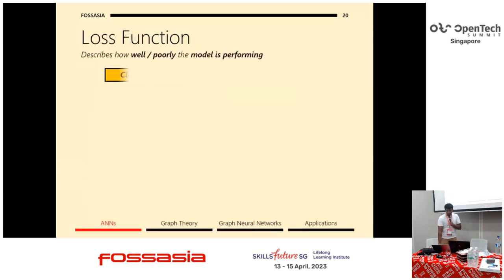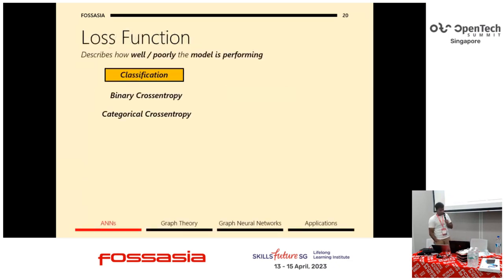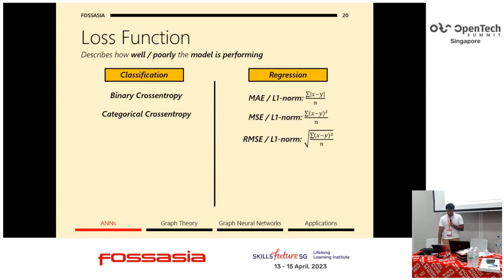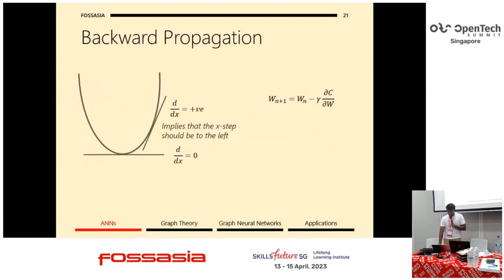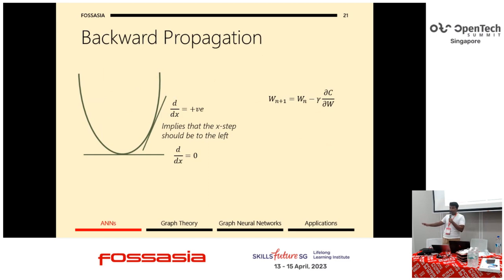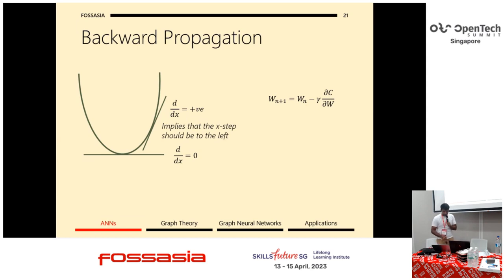To measure the error of the function, we use a loss function — common ones are the L2 norm and L1 norm. To calculate the actual weight values, we use backpropagation, but that is usually handled entirely by the library, so you don't have to worry about it.